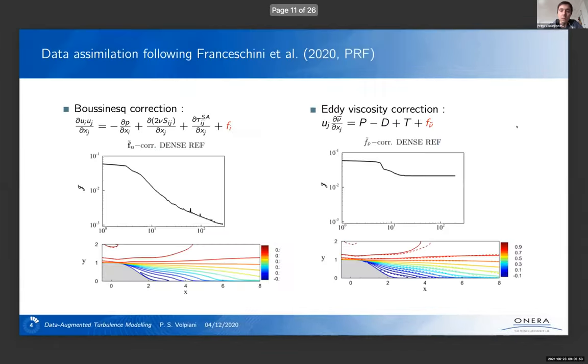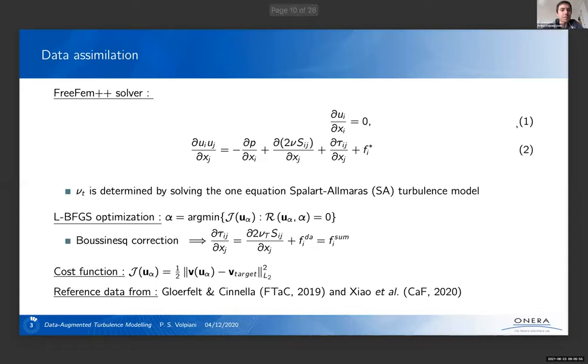So let's move on to our case. So to solve the RANS equations, we're going to use the FreeFrame solver. It's an open source code. And the term that we're going to need for the RANS modeling is this term here. And we're using the Spalart-Allmaras turbulence model.